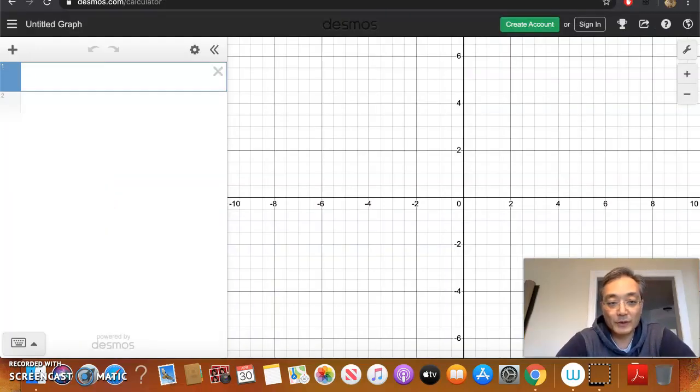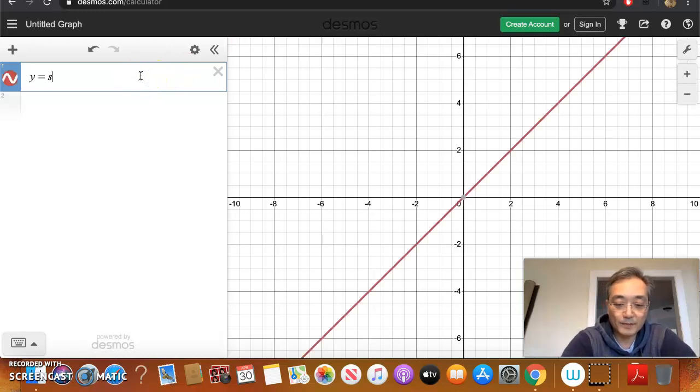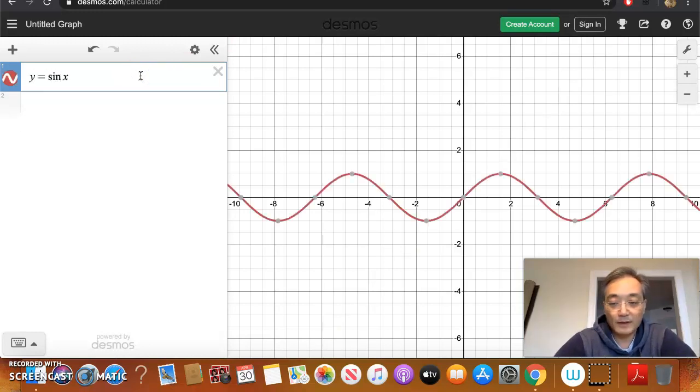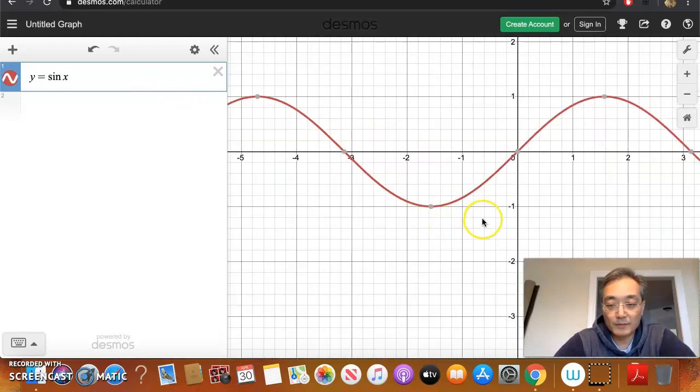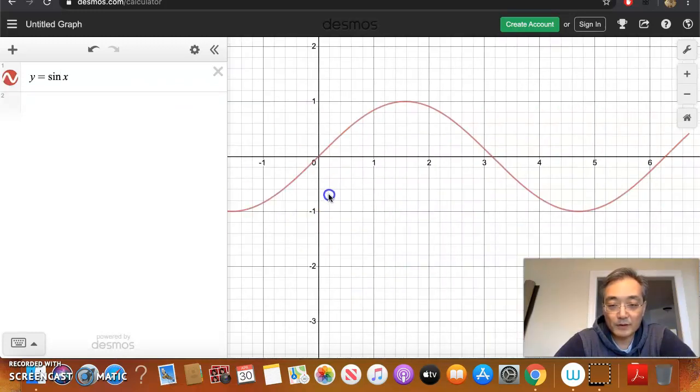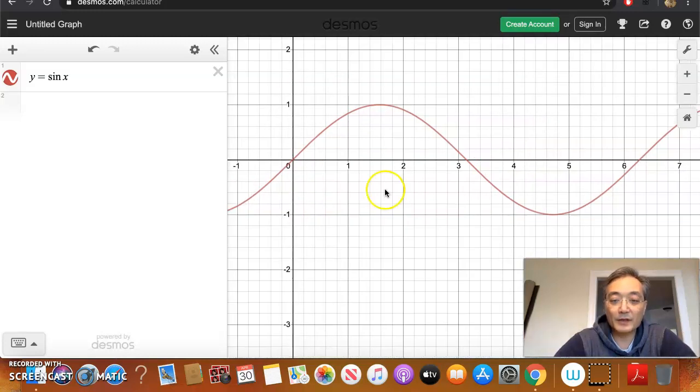So I'm going to show you in Desmos. First we're going to do y equals sine x. And I'm going to make that a little bit bigger. So here is a typical sine graph, correct? Starts here at 0,0.